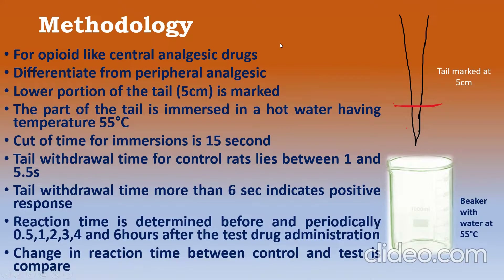You can prepare an observation table in which one column records the reaction time for the control animal and the second column records the reaction time for the test drug. If you are using different doses, you can prepare separate groups and calculate the differences between control and test animals, which will reveal the analgesic property of the drug.